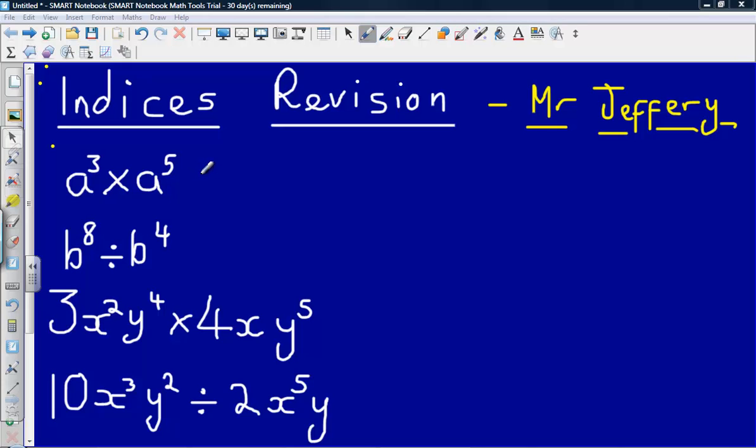So the first one up here we've got a cubed multiplied by a to the power of five. When we are multiplying powers we simply add the powers. So in this first one we will get a to the power of three times by a to the power of five will give us a to the power of eight, simply adding those powers.